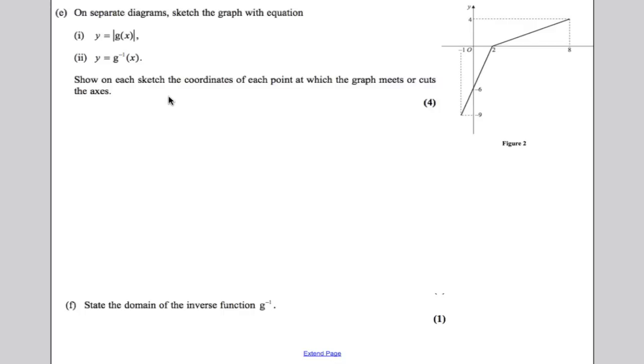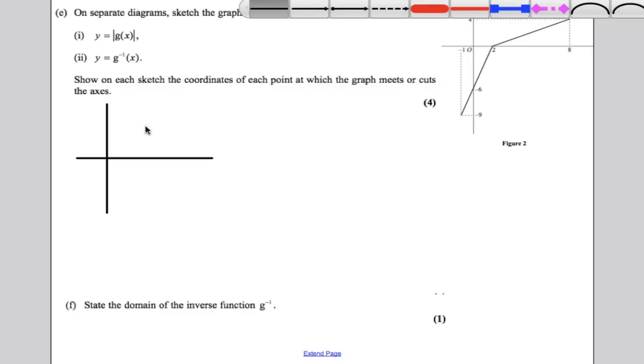Now, on separate diagrams, draw the following. So imagine we were drawing this here. I'll draw it like this here. Now, the modulus of g of x, well, what that does is when g is positive, it keeps it positive. And then where g becomes negative, it reflects that upwards as such as follows.